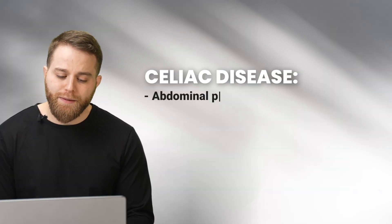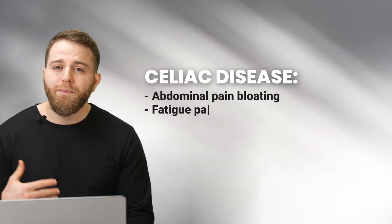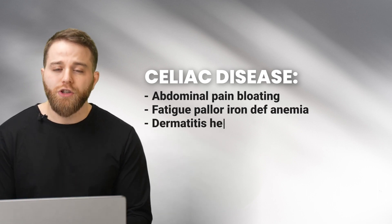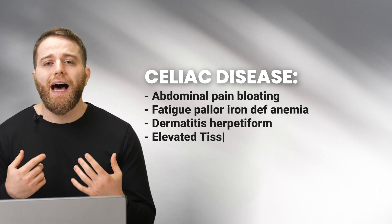Celiac disease is diagnosed with elevated tissue transglutaminase IgA antibody. Duodenal biopsy reveals villous atrophy and crypt hyperplasia. Treatment is to avoid gluten. For acute management of dermatitis herpetiformis, dapsone can be given. Key associations: abdominal pain, bloating, fatigue, pallor, iron deficiency anemia, dermatitis herpetiformis, elevated transglutaminase IgA, and biopsy showing villous atrophy and crypt hyperplasia.